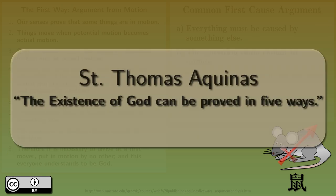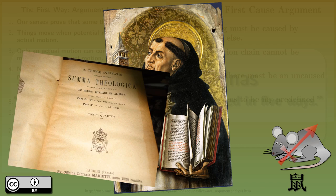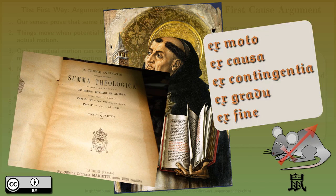St. Thomas Aquinas. The existence of God can be provided in five ways. Thomas Aquinas is considered one of the doctors of the Church by the Roman Catholic Church, and his arguments are heavily valued by other denominations. In his work Summa Theologica, he exposes five ways in which we can supposedly prove the existence of God.